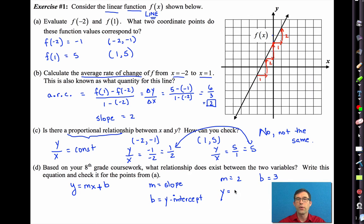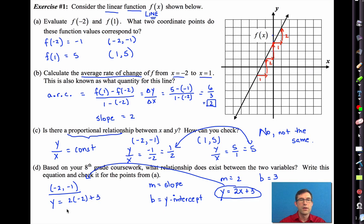Now, based on our eighth grade coursework, what relationship does exist between the two variables? Write the equation and check it for points A. From your eighth grade coursework, you worked extensively with the equations of lines. What you should have seen was that all lines can be written in the form y equals mx plus b, where m is the slope of the line, and b is the y-intercept.